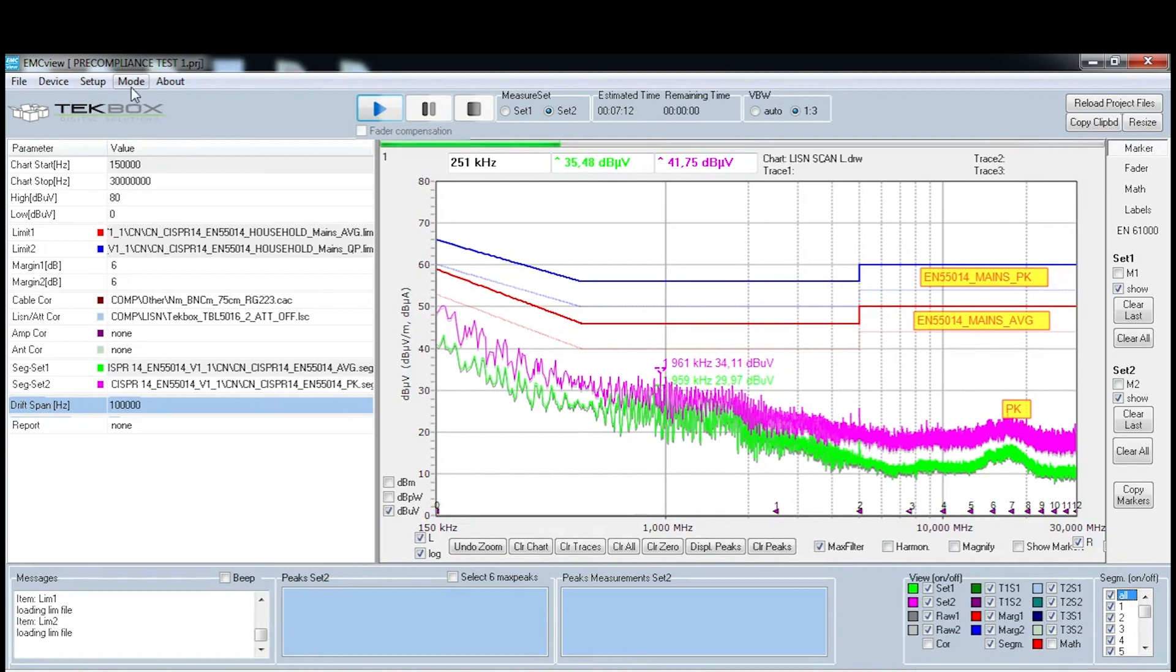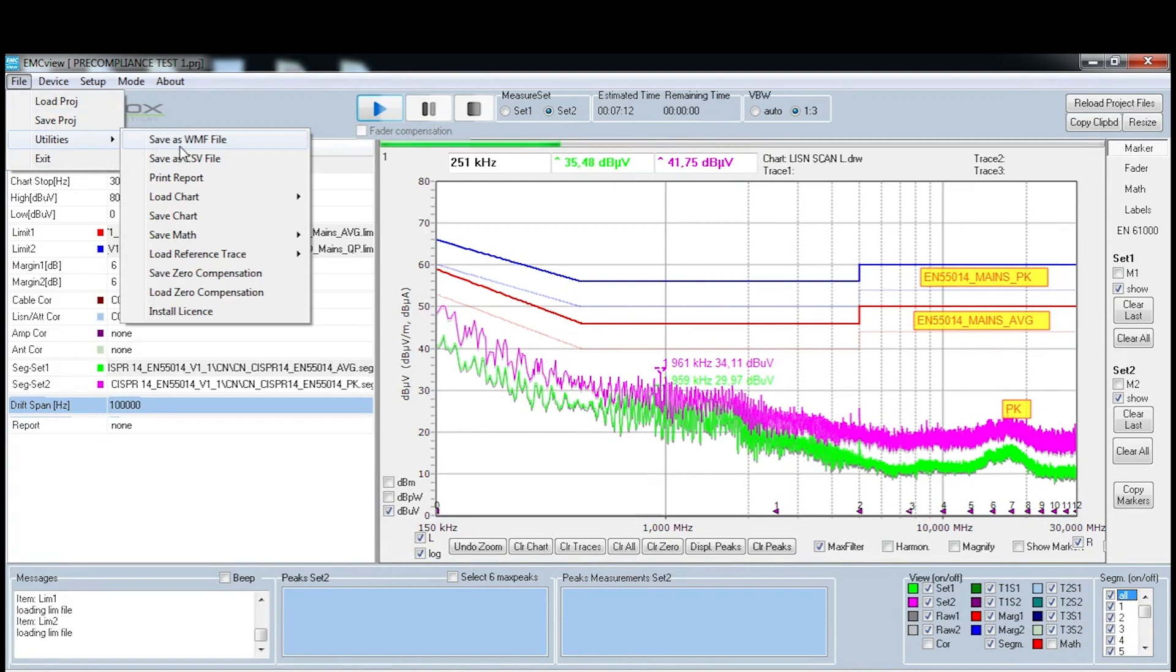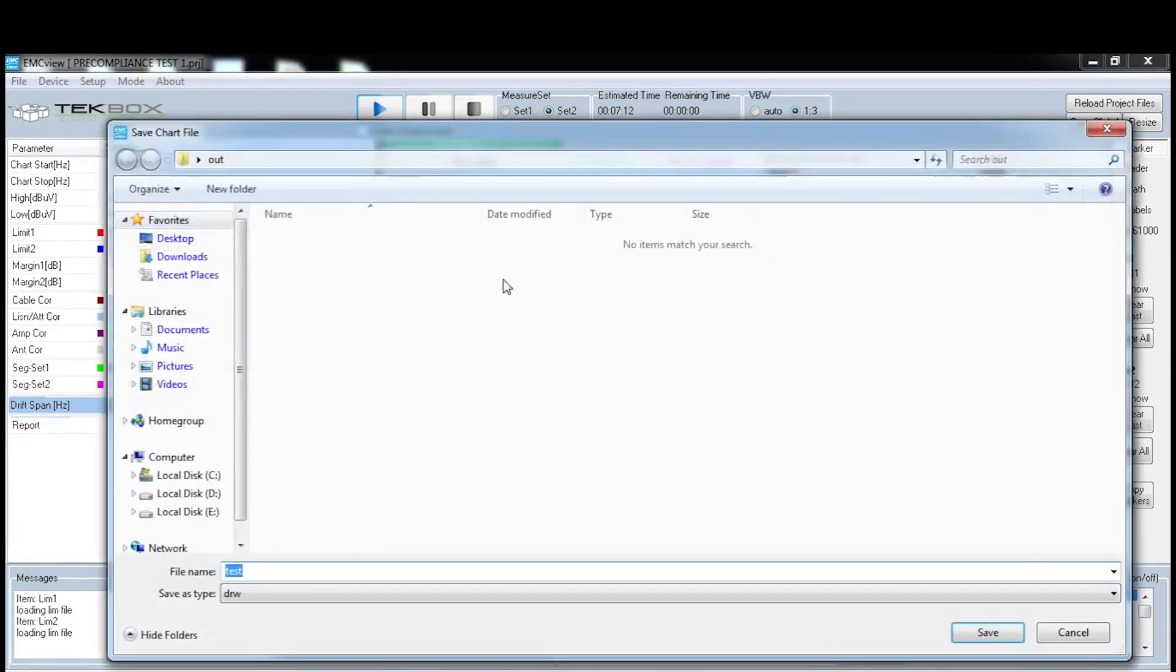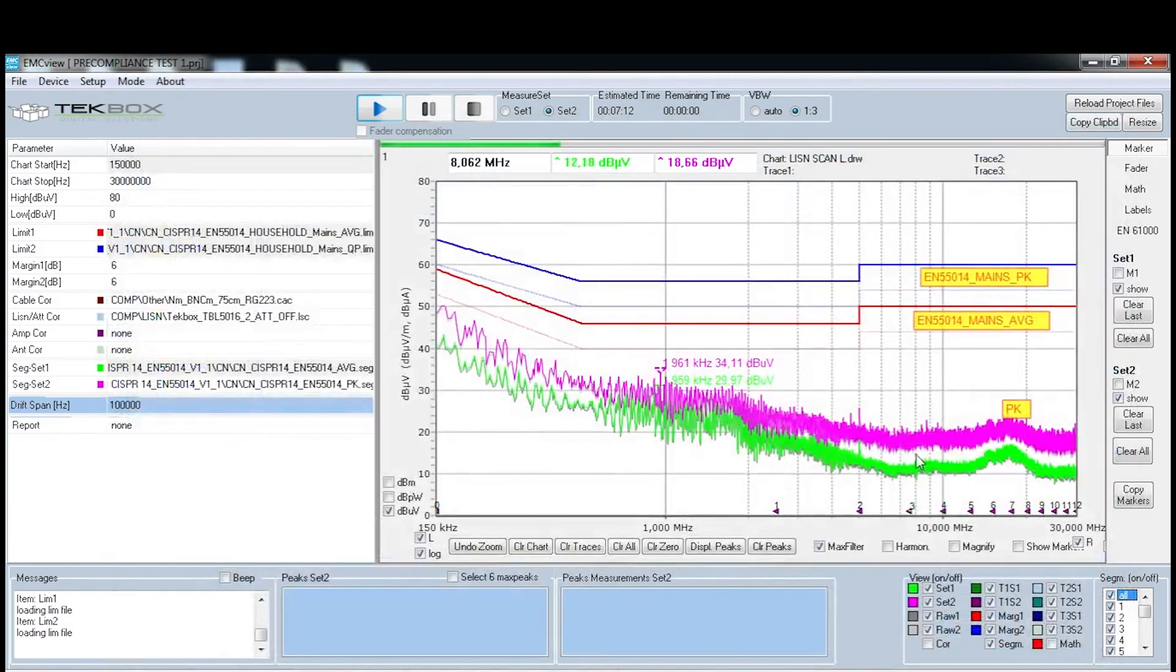Other useful functions include you can also use this software as a generator to generate your spectrum analyzers tracking generator connected to an RF amplifier to do some immunity tests. One other useful function is if you go to file and then you go to utilities, you can save the results as pictures, as CSV file, or what I found most useful is you save charts.